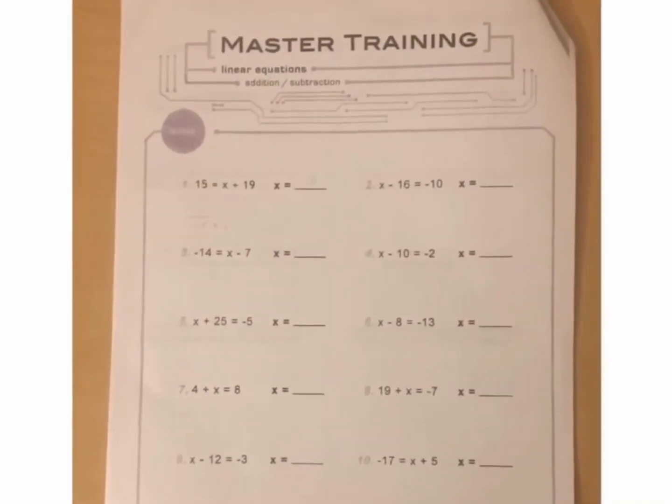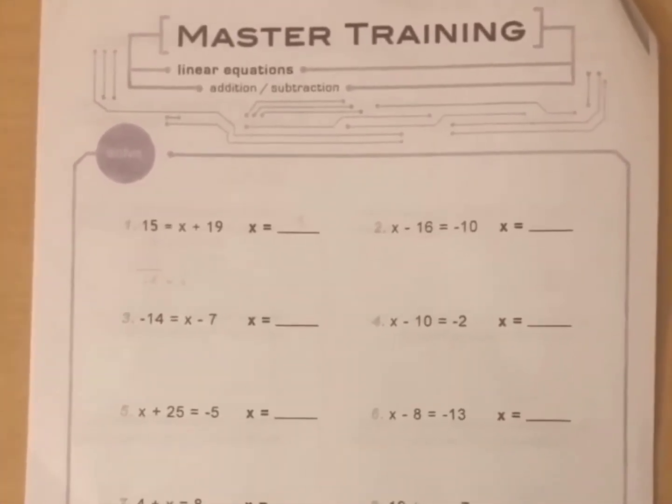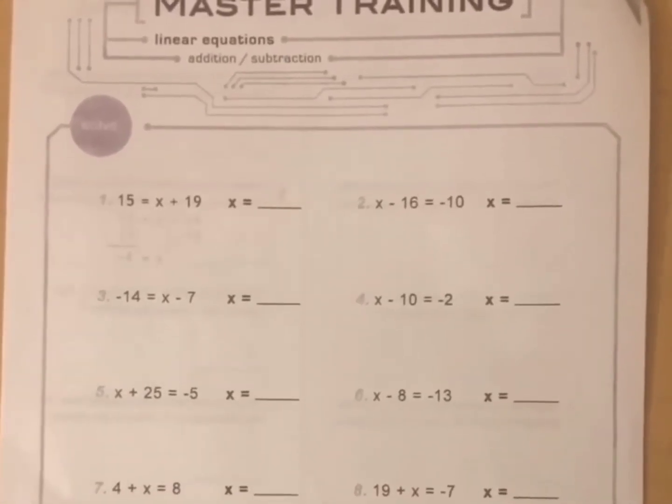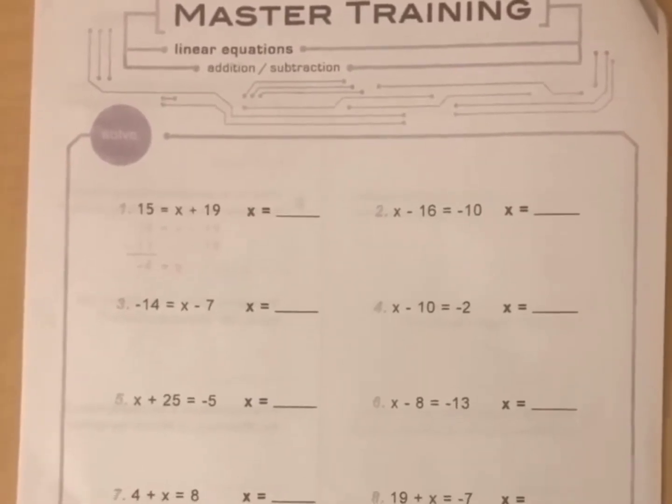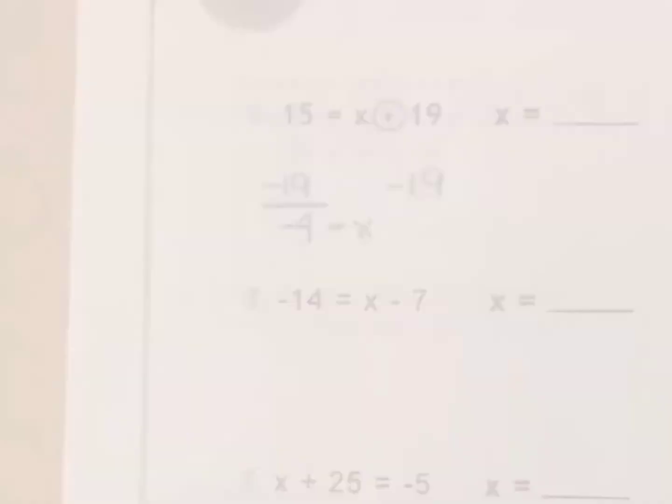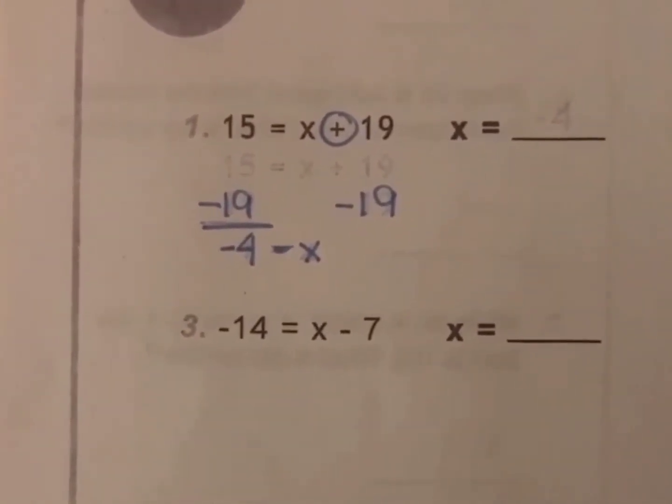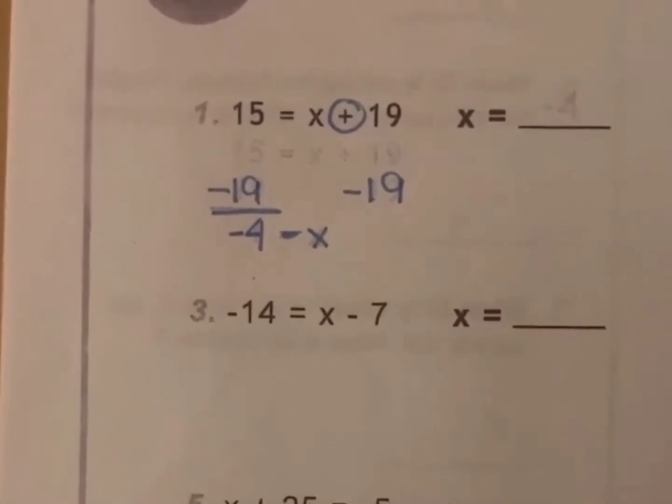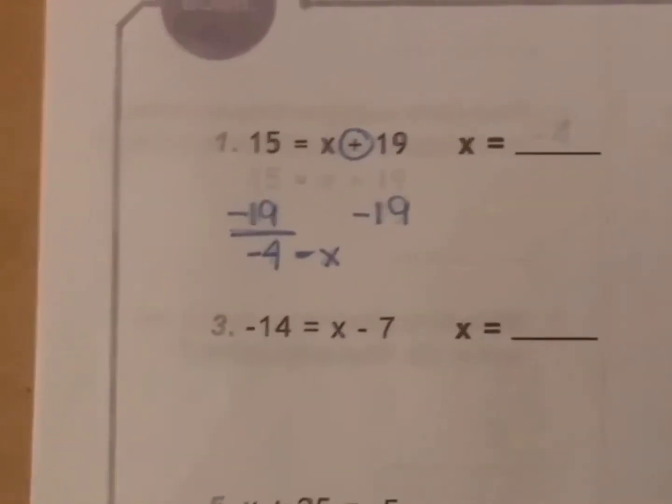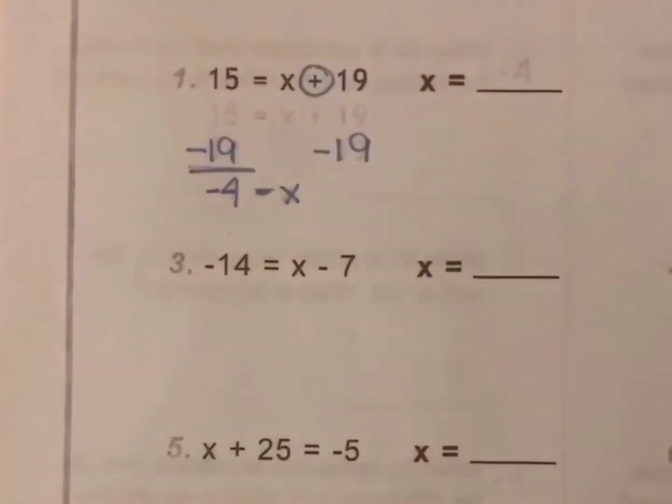Next, open to page 6. It's got master training on the top. I want to make sure you understand that you need to solve these algebraically, not just by figuring out what the x is. You can do that with most of these, if not all of them. But, the point is learning how to solve these by using the inverse operation. Inverse means opposite. In the example one, you have 15 equals x plus 19. The goal of algebra is to simplify it until you get x all by itself. So, right now you have x plus 19. So, in order to get rid of the 19, you're going to subtract 19 because subtraction is the inverse operation of addition.